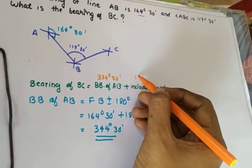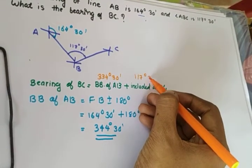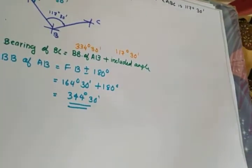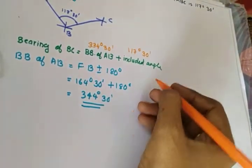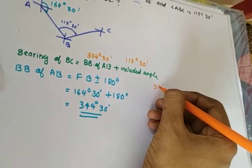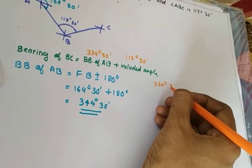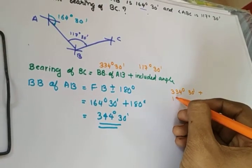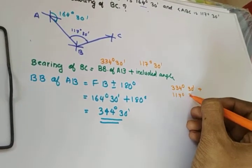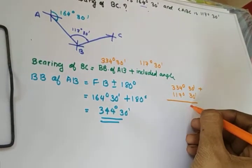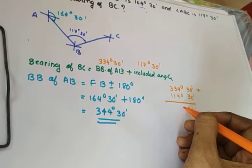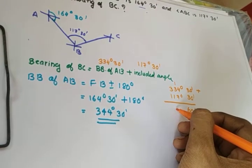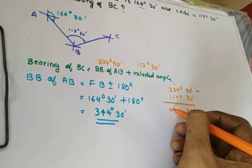Back bearing of AB is 334 degrees 30 minutes. The included angle is 117 degrees 30 minutes. Bearing of BC equals 334 degrees 30 minutes plus 117 degrees 30 minutes, giving us 60 minutes carried over.